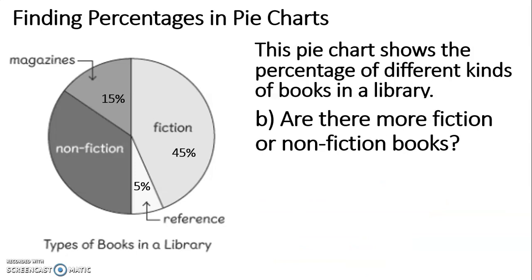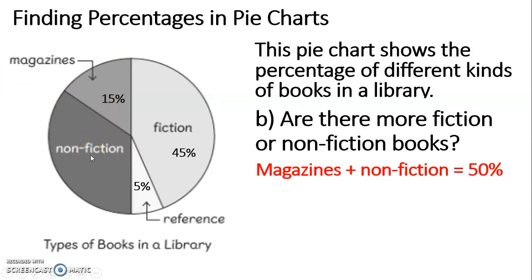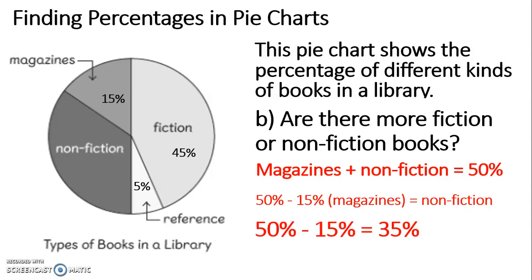On to B. It asks us: are there more fiction or non-fiction books? We need to prove it, so let's use that same method. The other half of the pie chart — that section for magazines and that section for non-fiction — would add up to 50%. We know 15% are magazines. So if we subtract the 15% of magazines from the 50% on that half of the pie chart, we will get 35%. That means 35% of the books in that library are non-fiction.